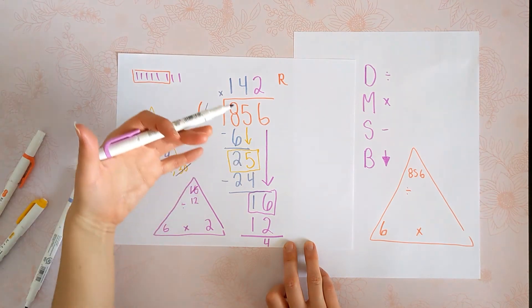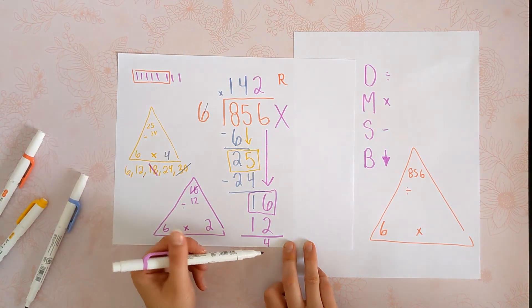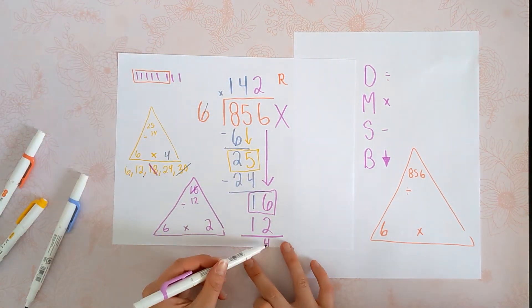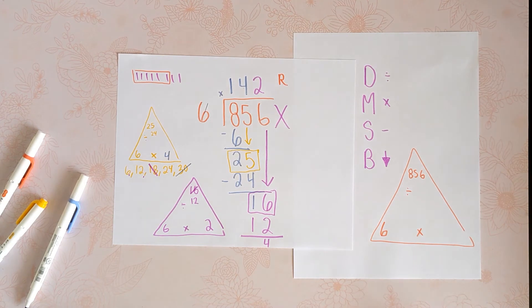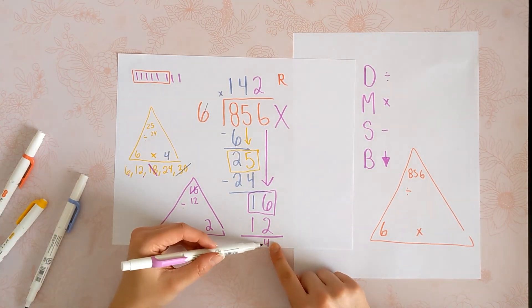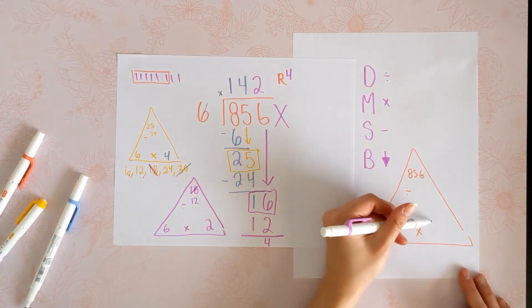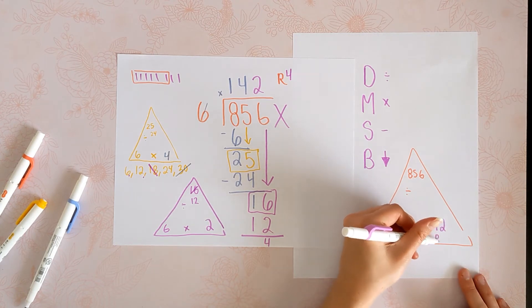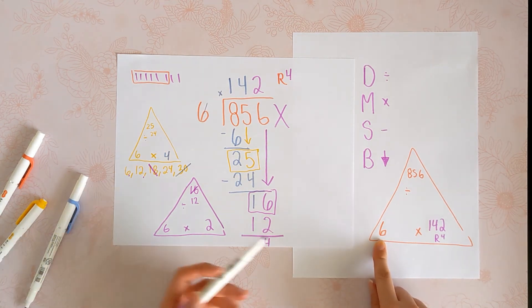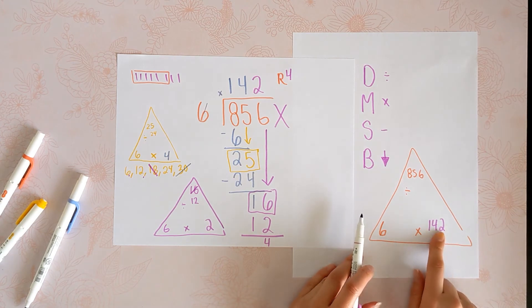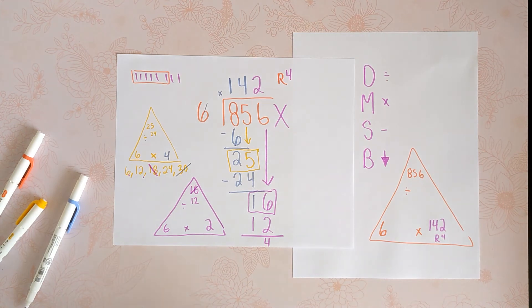Bring down. There's nothing to bring down. Can we divide 4 divided by 6? No. And also when there's nothing else to bring down, we know to stop too. So our answer officially is 142 remainder 4. And here's what this means. If I divide up 856 divided by 6, each of my 6 friends would get 142, and I would have 4 left over.